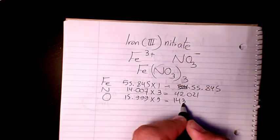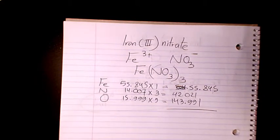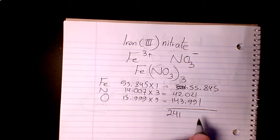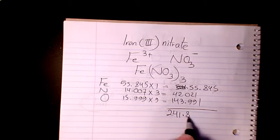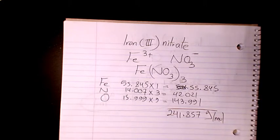Then you need to add them all. That makes it as 241.857 grams per mole. So that's the molar mass or molecular weight of iron(III) nitrate.